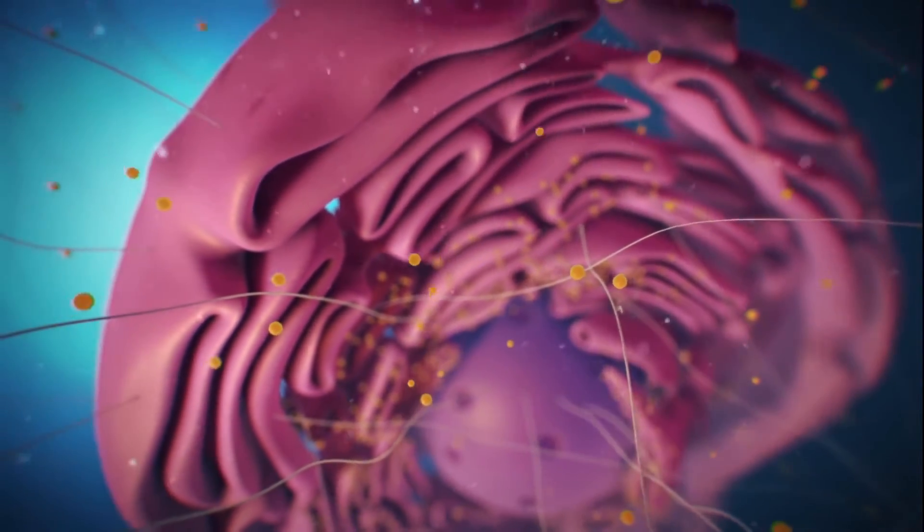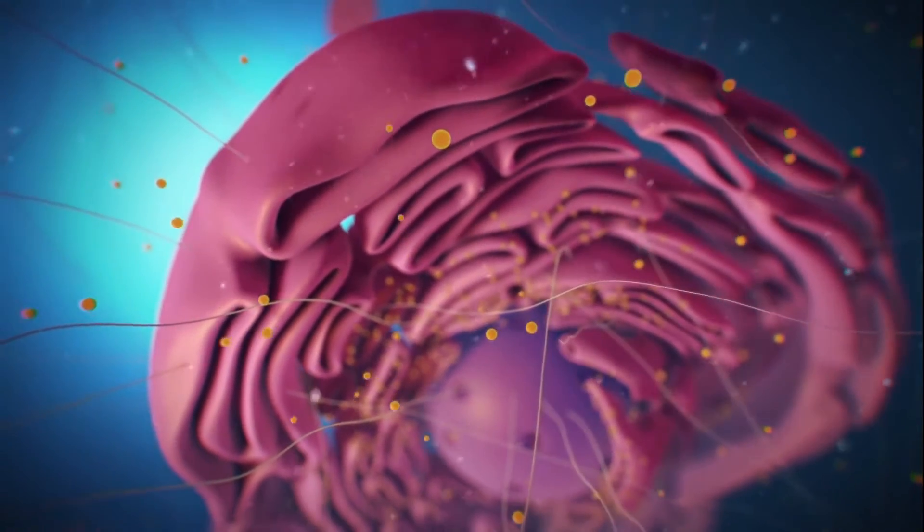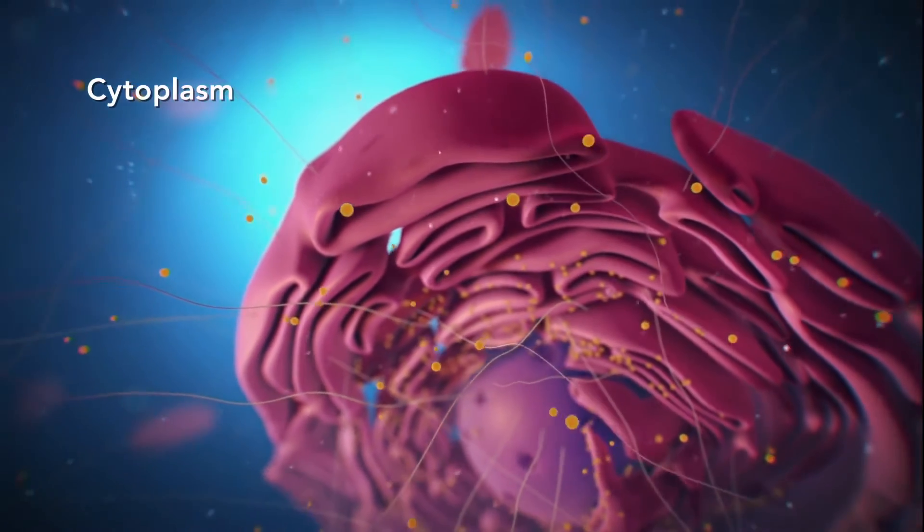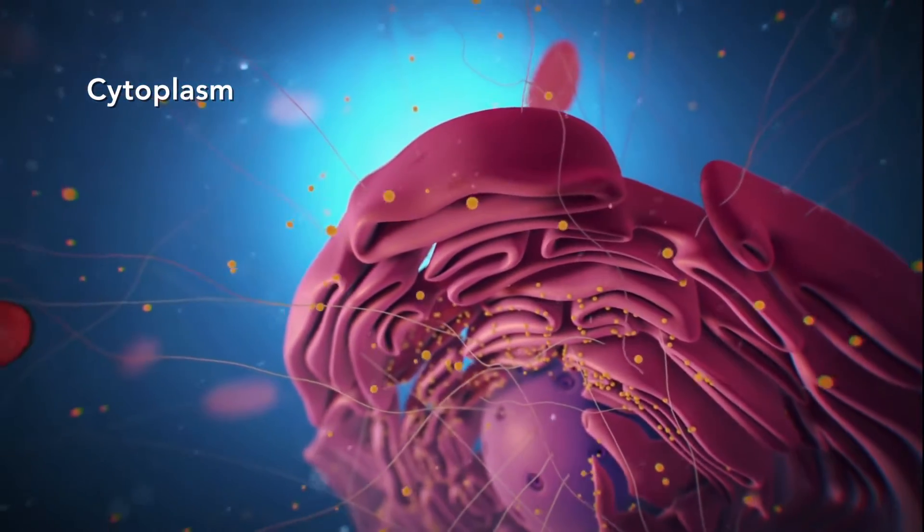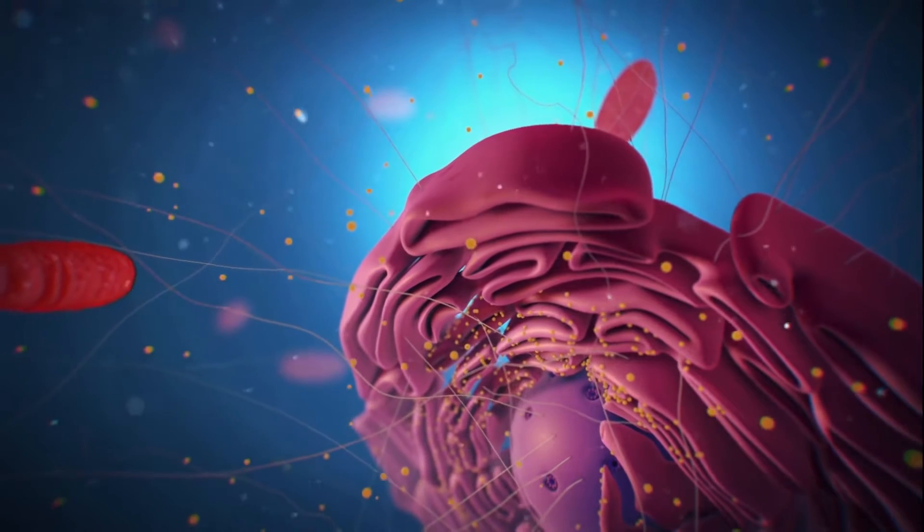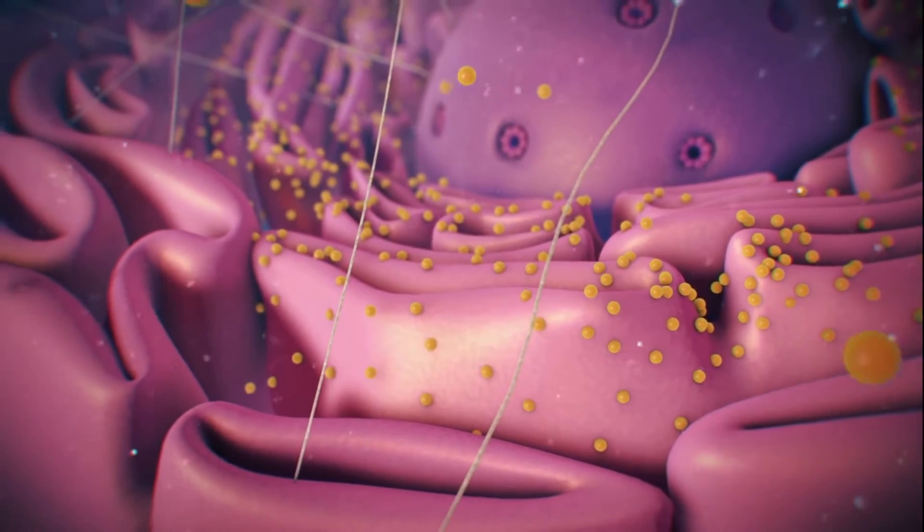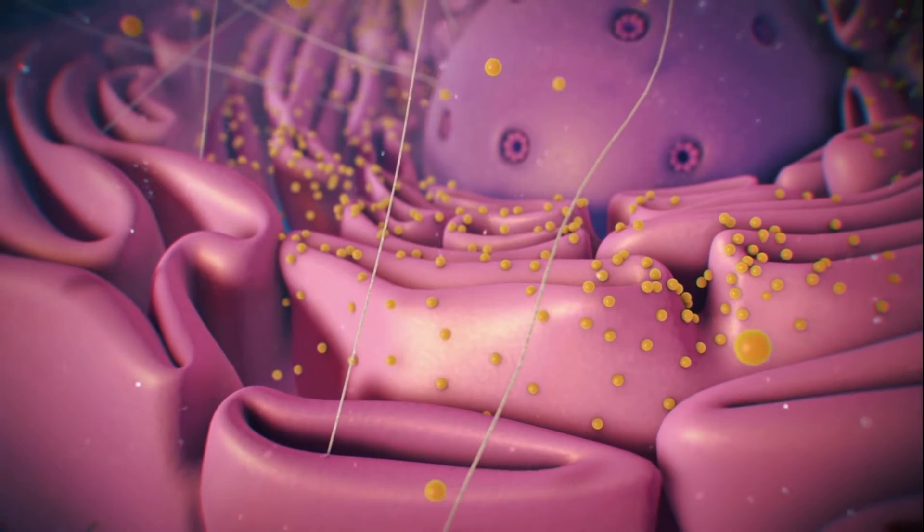Outside the nucleus, the ribosomes and the rest of the organelles float around in cytoplasm which is the jelly-like substance. Ribosomes may wander freely within the cytoplasm or attach to the endoplasmic reticulum, sometimes abbreviated as ER.